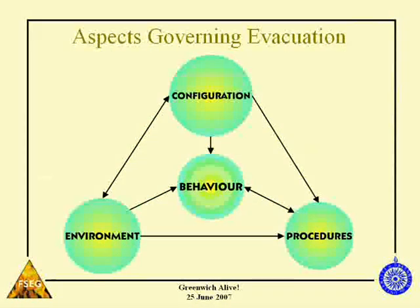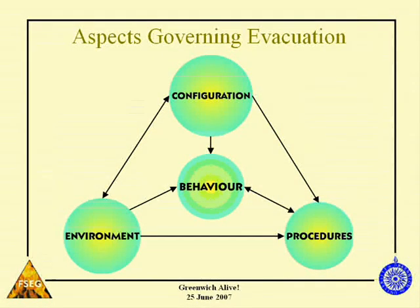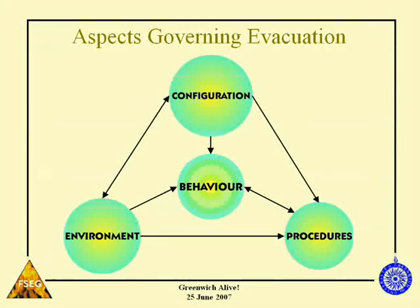When we talk about evacuation behaviors, there's actually a set of things we need to consider. We need to consider the configuration of the structure: how many exits are there, how wide are the exits, what are the travel distances, and so on. These are important, but they're not the only thing that's important. If you look at the old building codes, the weakness of the old building codes, in my opinion, was that they mainly focused on configuration when talking about evacuation, and that doesn't tell you the whole story.